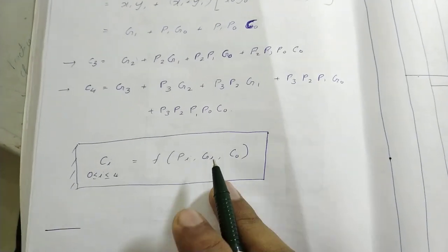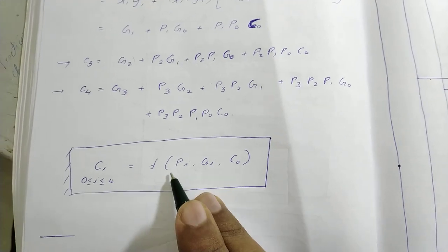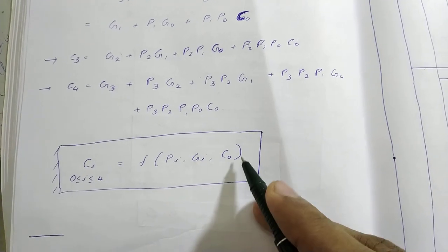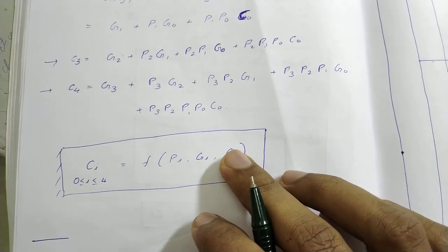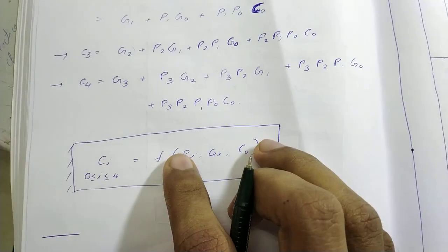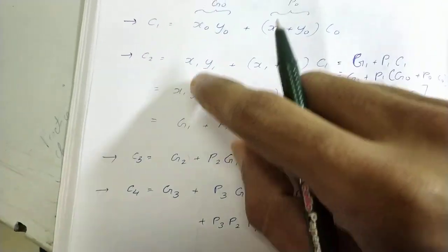So in one gate delay we will have all the pi's and gi's, and c0 also we already have. That is, c0 will be zero. So in terms of these three variables we have written every one of the carries.